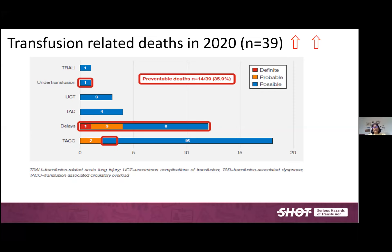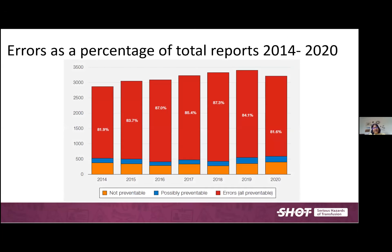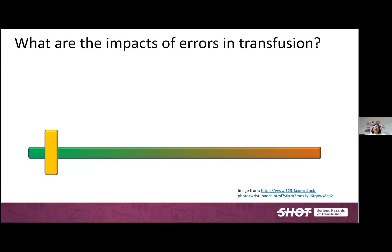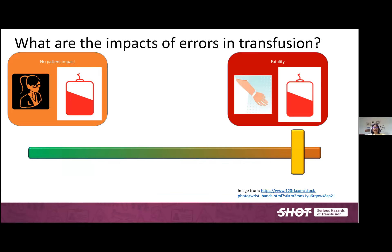These deaths can also occur in transplant patients. The question is always what is the preventable harm and what can we proactively do to make things safer. Of all SHOT reports, more than 80% over the last few years have been related to errors — clinical, laboratory, or a combination. Sometimes despite errors there is no patient impact because the right component was ultimately transfused, or errors are picked up as near misses. However, some errors can potentially result in patient death, which is why we need to identify weak points in the system and improve.